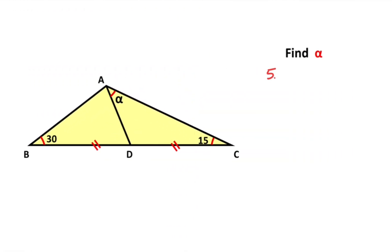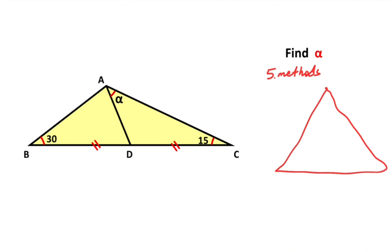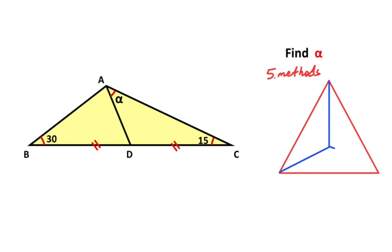Now let's calculate the value of alpha using the fifth method. Before the solution I'd like to mention a feature: we know that in a triangle the angle bisectors intersect at a single point. If we use this property for the question — taking 20 degrees from here and 15 degrees from here — and extend this corner, they will intersect above.